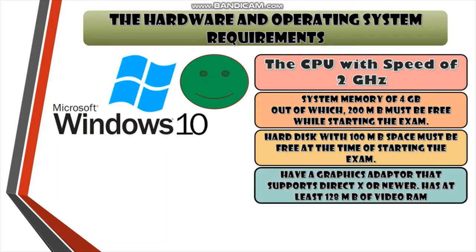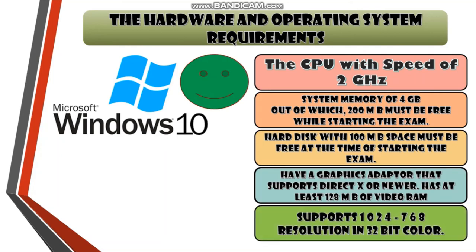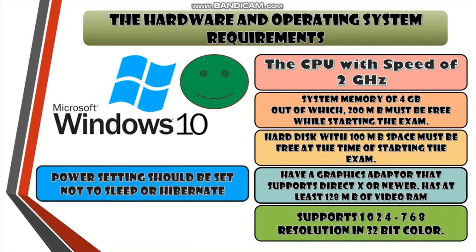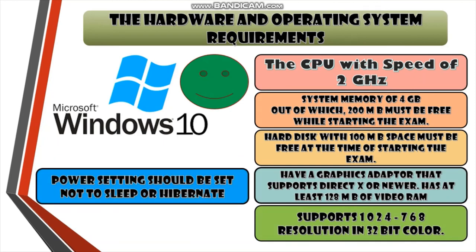Point 4: graphics — the system should have a graphics adapter that supports DirectX or newer, has at least 128 MB of video RAM, and supports 1024x768 resolution in 32-bit color. Point 5: power — the power settings of your system while starting the exam should be set not to sleep or hibernate during exam delivery. These are all the system requirements for Windows 10 users while giving the ACCA computer-based exam from home.